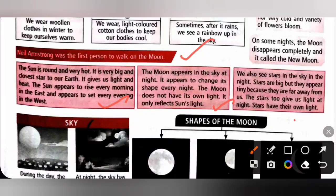The moon appears in the sky at night. It appears to change its shape every night. The moon does not have its own light — it only reflects the sun's light. We also see stars in the sky at night. Stars are very big but they appear tiny because they are far away from us. The stars give us light at night and have their own light, while the moon reflects sunlight.